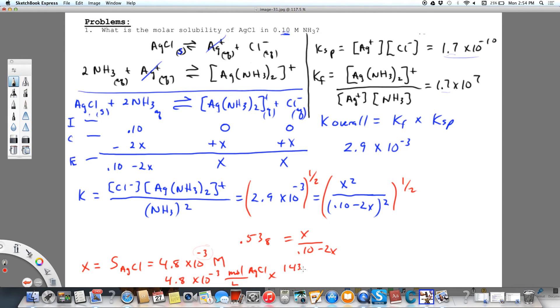So that's 143.32 grams AgCl per one mole AgCl. And so that would equal 0.69 grams AgCl that would dissolve in one liter of solution, provided we have 0.10 molar ammonia. Be assured it would be a lot less if there was no ammonia present.